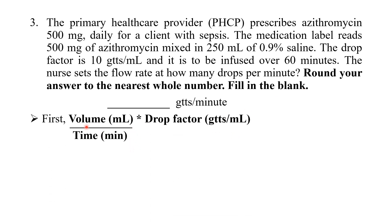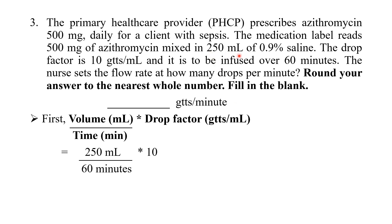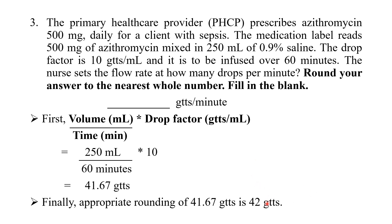In this formula, volume must be in mL, time in minutes, and drop factor in gtts per mL. Volume is 250 mL, time is 60 minutes, and drop factor is 10 gtts per mL. Calculating: (250 ÷ 60) × 10 = 41.67 gtts. Rounding to the nearest whole number gives 42 gtts per minute. The answer is 42.